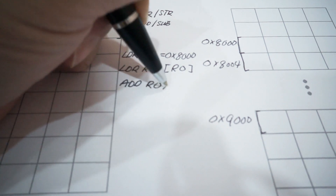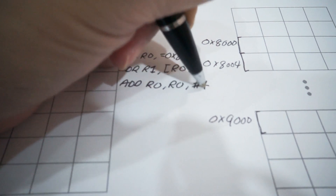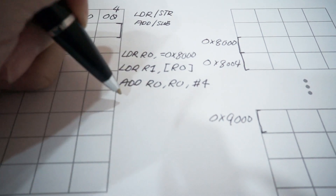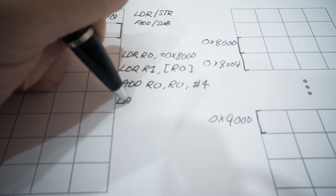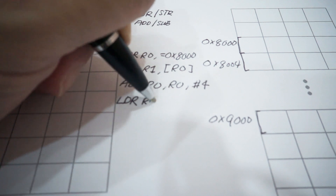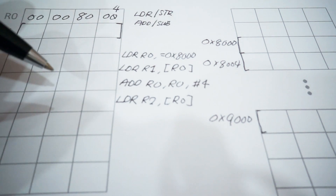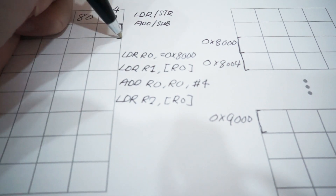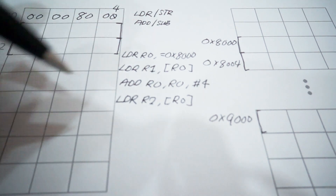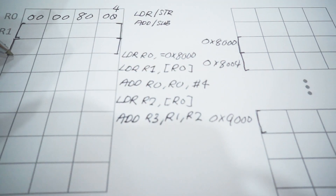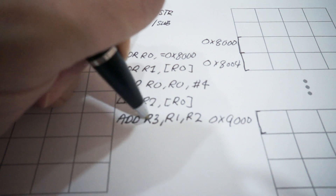Next, we can add 4 to register R0 to change the value from 0x8000 to 0x8004. This will allow us to load the second value from address 0x8004 by using R0 again as the address pointer. Once both values are moved to the registers, we can use the ADD instruction to do a summation of R1 and R2, and lastly store the result back to R3.